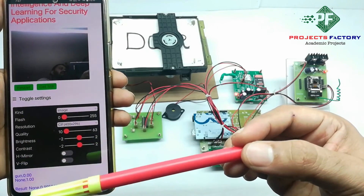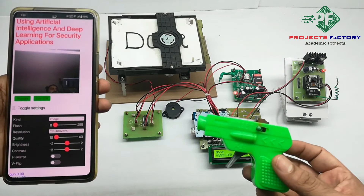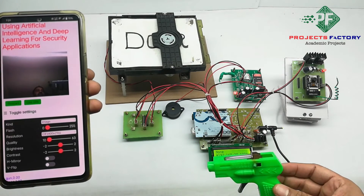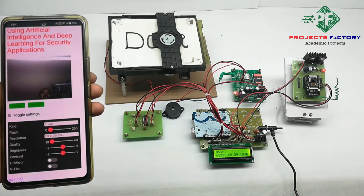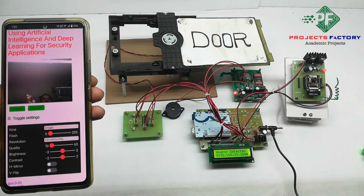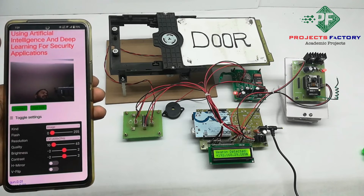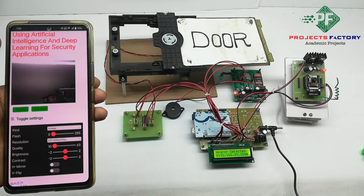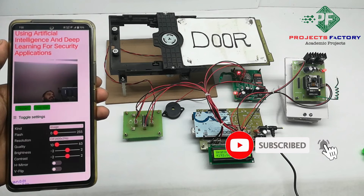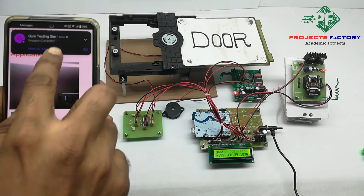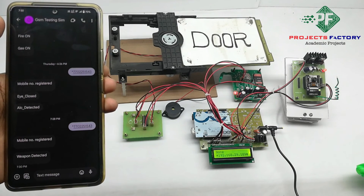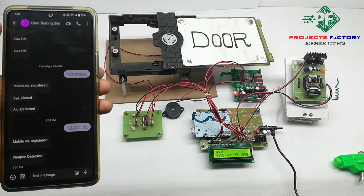There is a top icon — if a gun is shown in front of the camera, it will be detected, the door will be closed, and an SMS will be sent. Now showing the gun in front of the camera: it is detected. On the LCD it shows 'weapon detected,' the door is closed, the buzzer is also on, and an SMS is received confirming weapon detected. This is how we can detect weapons in ATMs or banks and provide automated security.